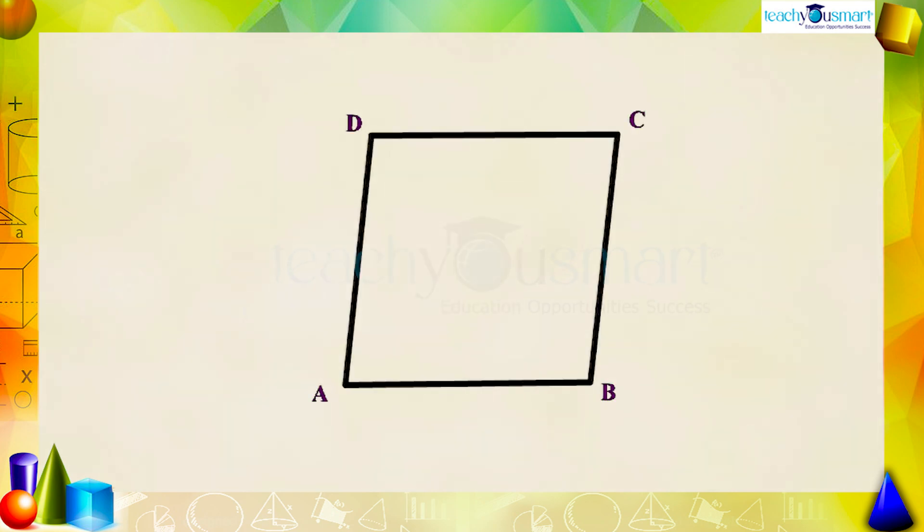ABCD is a rhombus and it can be split into two triangles by drawing the diagonal AC. BD is the other diagonal that meets AC at point O. We know that the diagonals of a rhombus perpendicularly bisect each other.